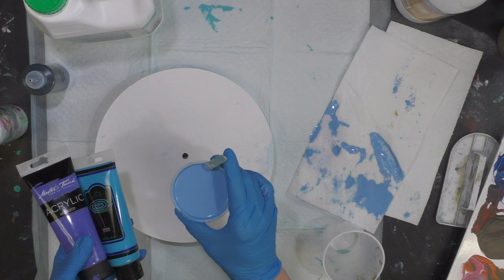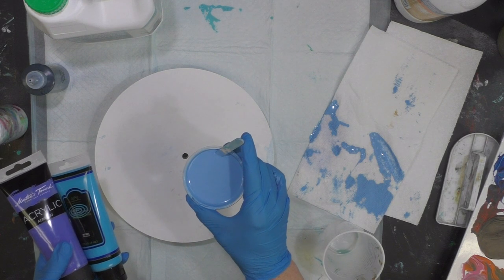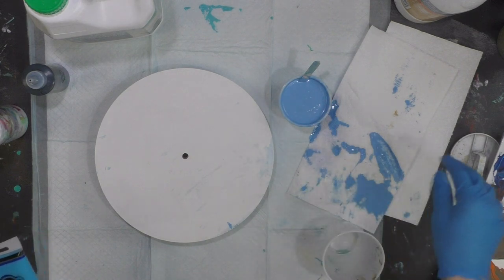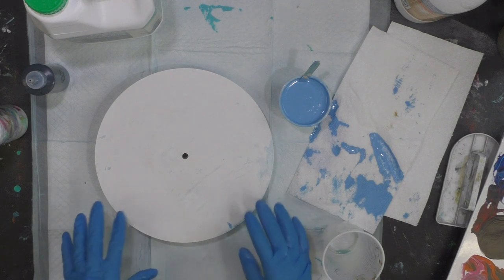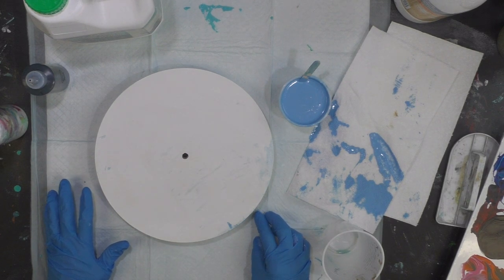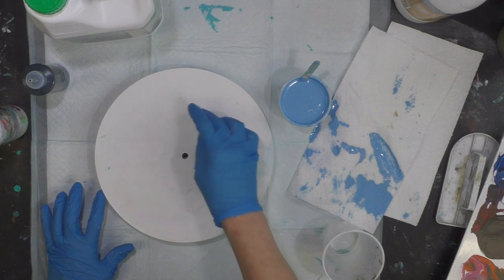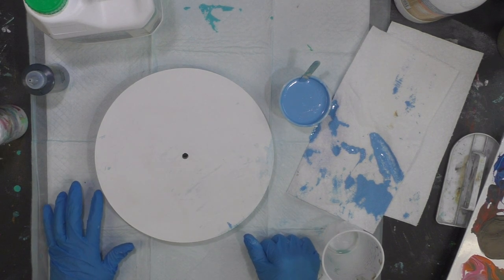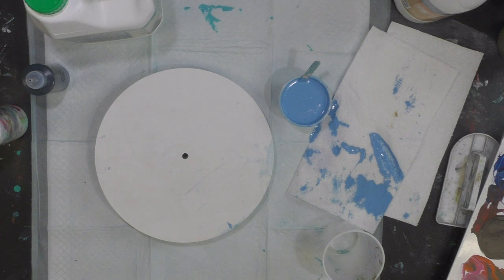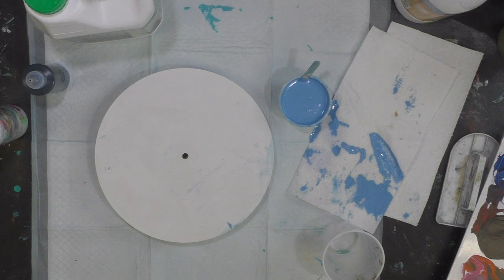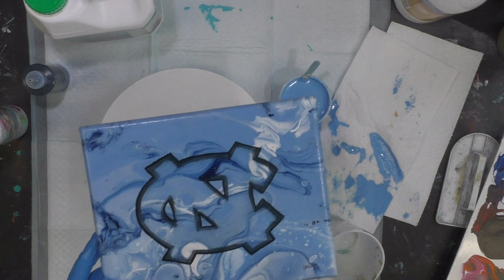Between the two of them, I came up with this Carolina blue, which is kind of the Chapel Hill UNC basketball team color. This is going to be a Carolina UNC Chapel Hill clock. I'm going to do the pour and let it dry for a few days, then next week I'll put a UNC emblem on it.